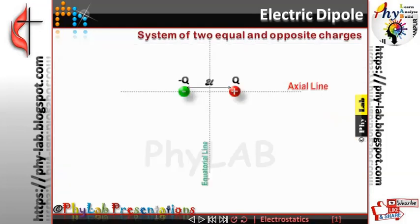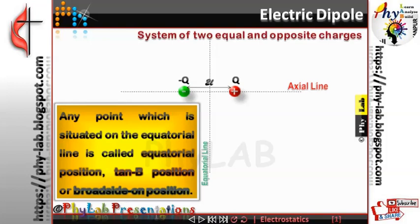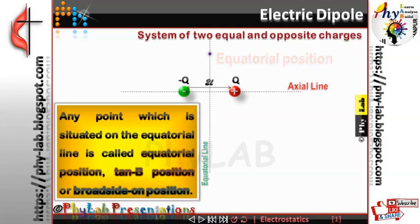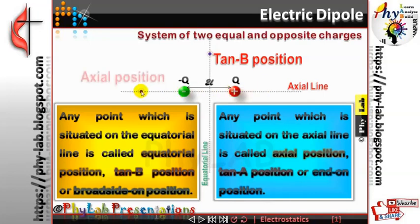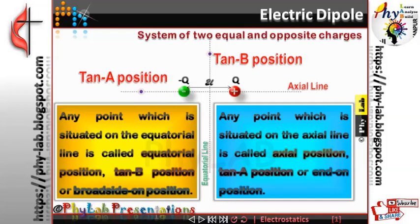Any point that lies on the equatorial line is referred to as the equatorial position, broadside-on position, or tan B position. Any point that lies on the axial line of the dipole is called the axial position, end-on position, or tan A position. Mostly they are referred to as axial or equatorial position.